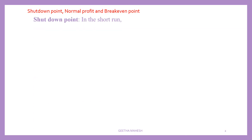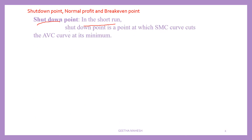Let us start with the shutdown point. We can discuss it in two divisions. First, shutdown point in the short run, and later we can discuss shutdown point in the long run. The shutdown point is a point at which the SMC curve cuts the AVC curve at its minimum point. The short run marginal cost curve cuts the average variable cost curve at its minimum point — we call it the shutdown point.